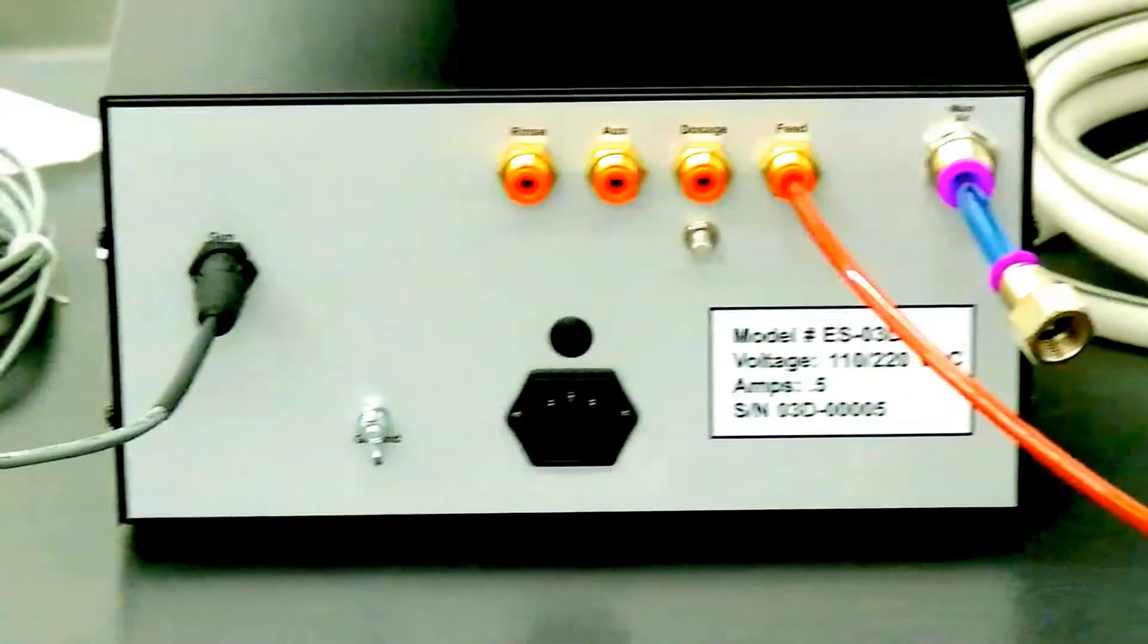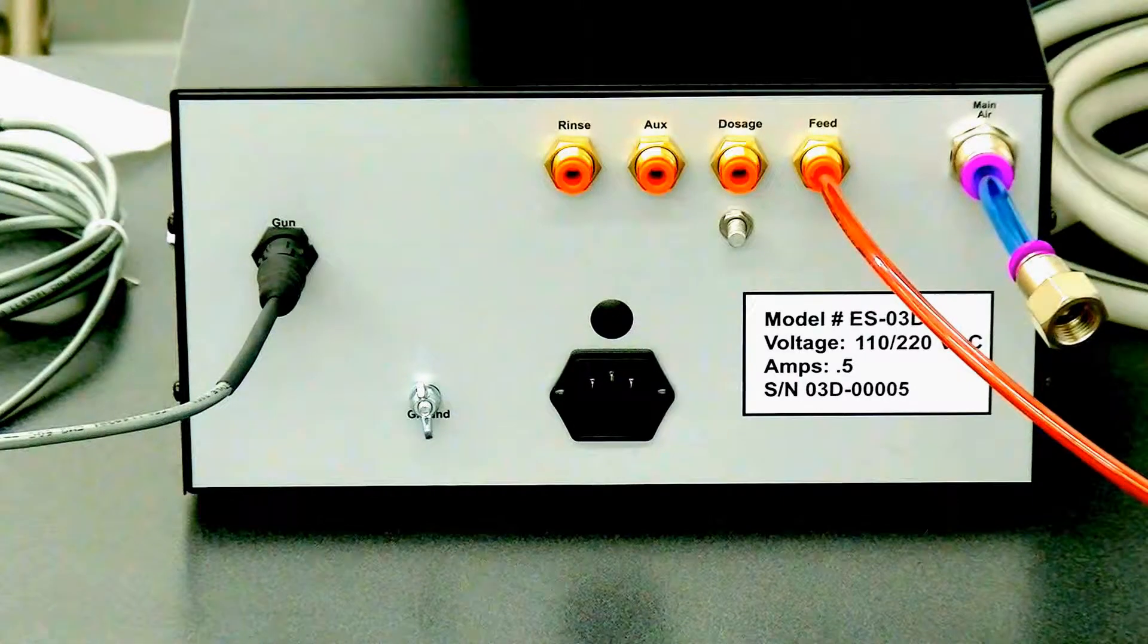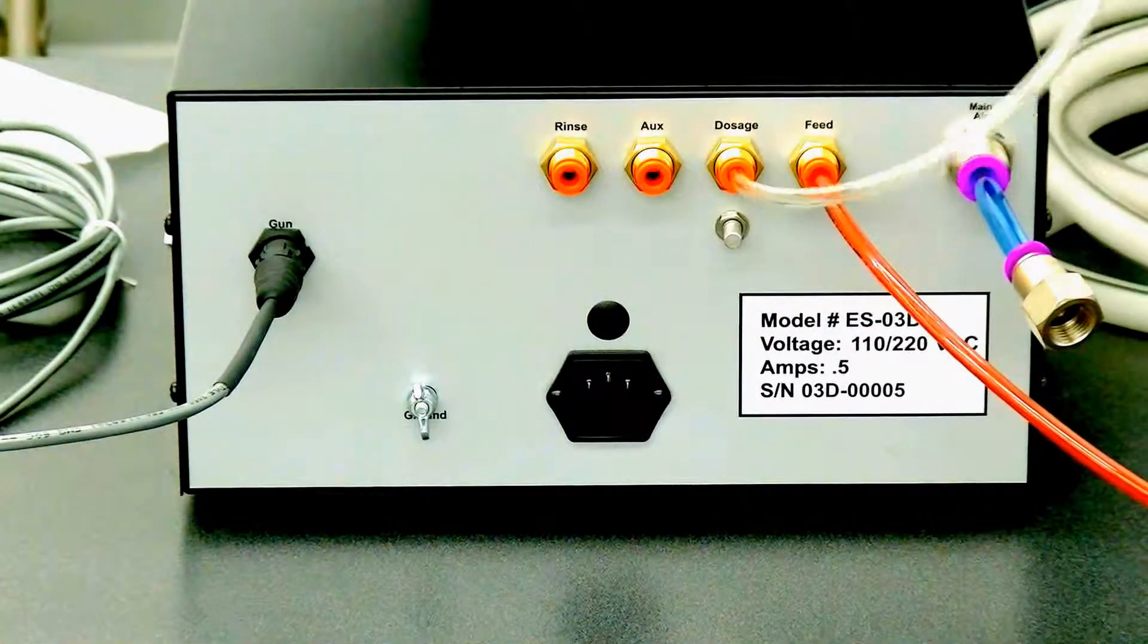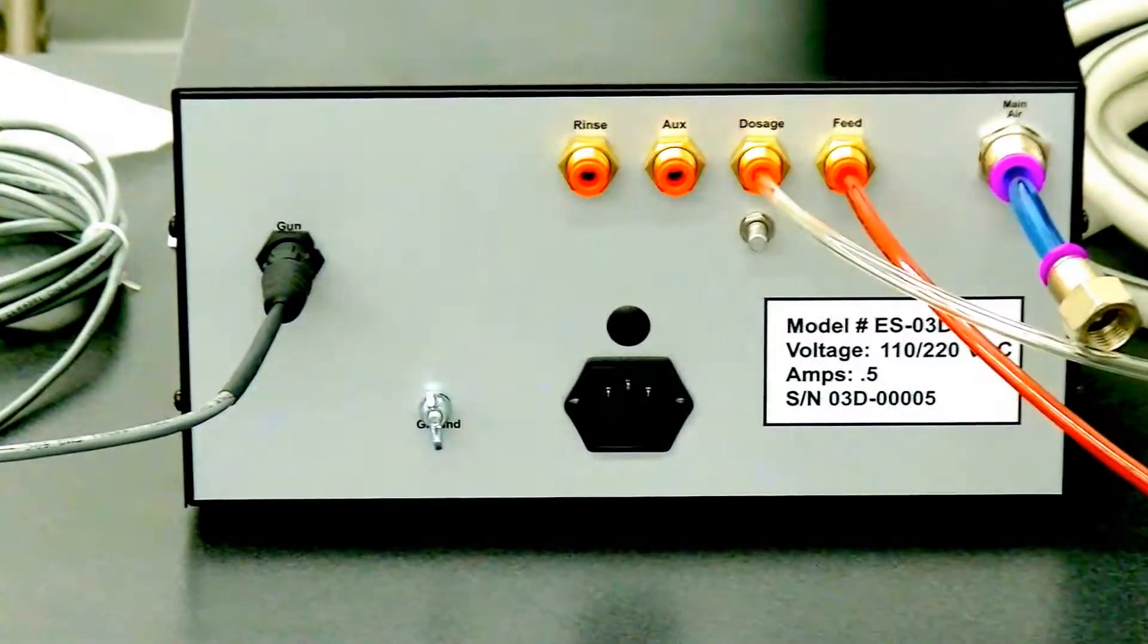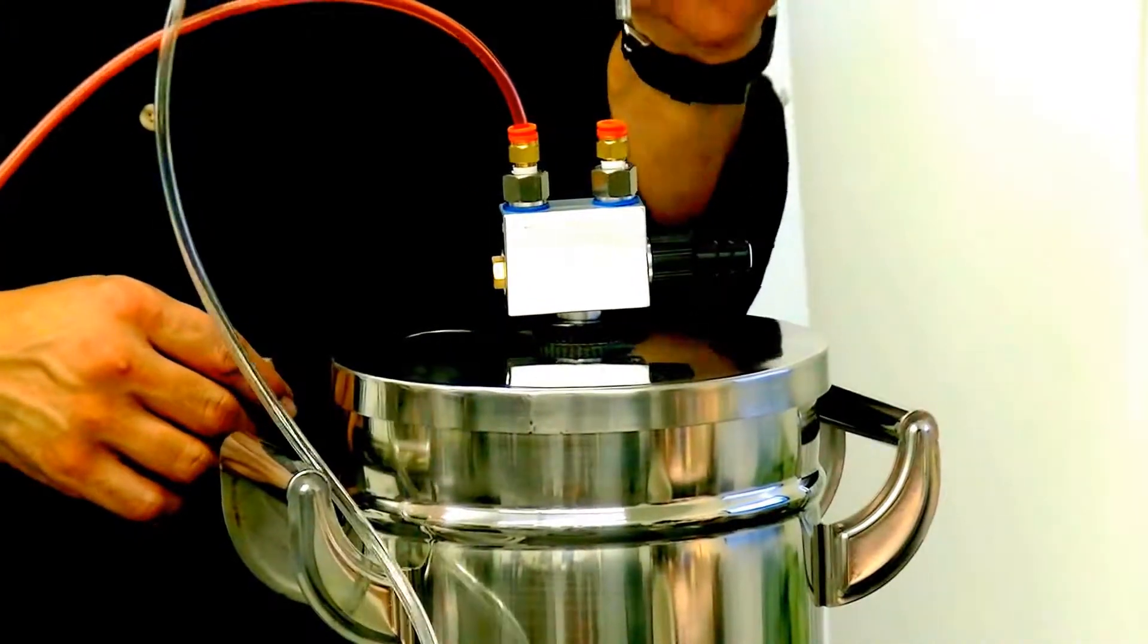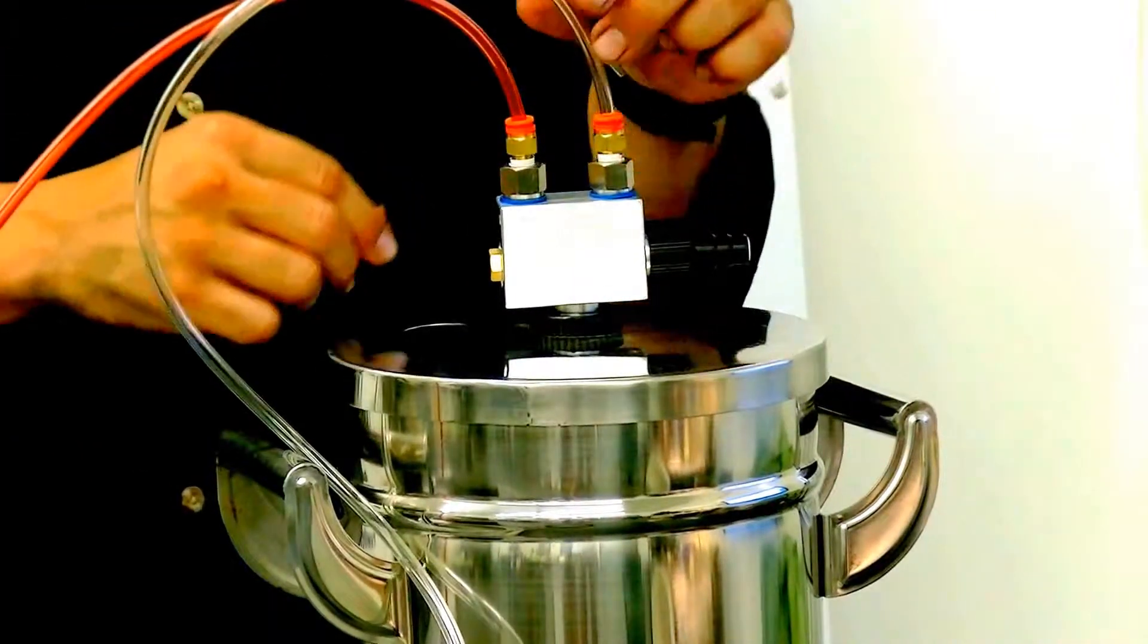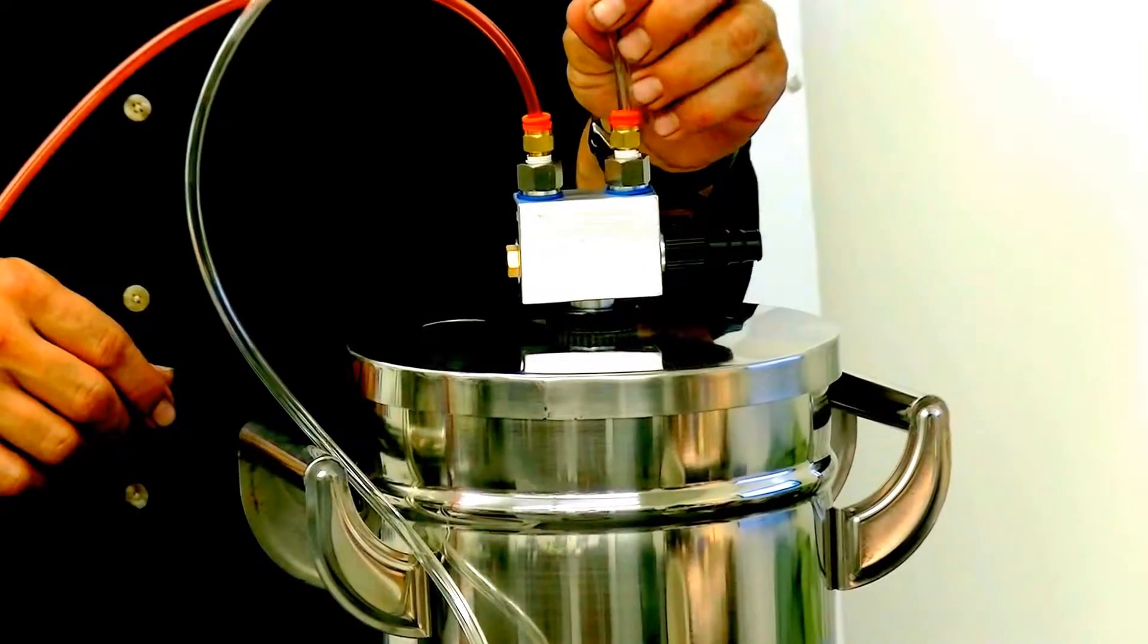Our next connection, we have our dosage air. And we're going to do our clear or light hose. And it goes into the dosage and then we're going to take it over here to our pump. Right here. And it goes into the dosage. And your dosage is always in the front of your pump. This is where your dosage air will always go.